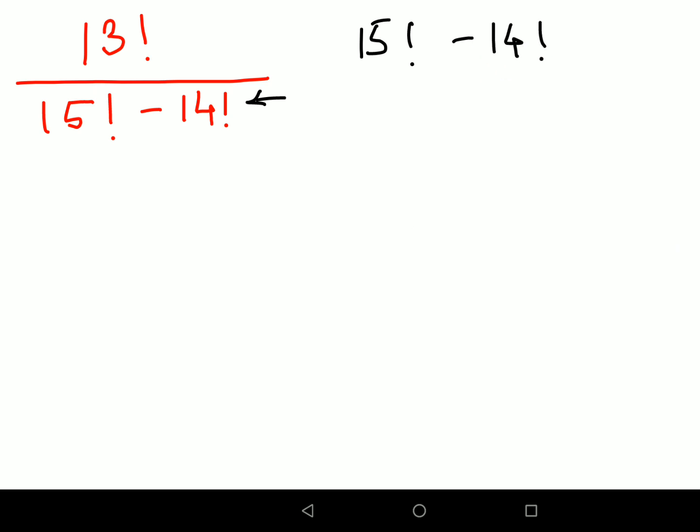Now remember what is a factorial? A factorial is nothing but whenever you have to find a factorial of any number, you have to start multiplying in the decreasing order. Means you will start with a, then you will do a minus 1, and you will continue multiplying till you reach 1.